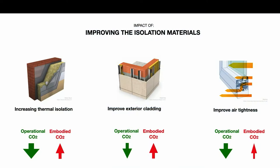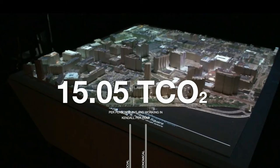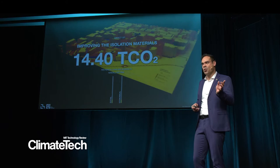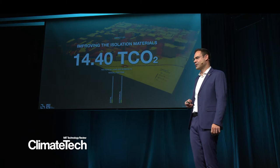When we talk about deep building retrofitting, we are talking about increasing thermal isolation, improving exterior cladding, and improving the air tightness of the building. Once again, we reduce the operational CO2 but increase the embodied CO2. With that, we can reduce 0.65 tons of CO2 per person, and we will move the needle positively on socio-economic indicators because we are increasing jobs in the construction sector.